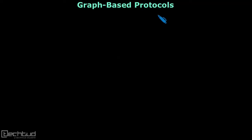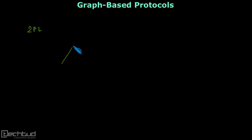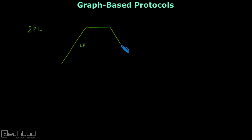Welcome to tector.com. In this lecture we will study graph-based protocols. So far we have studied two-phase locking protocol. In two-phase locking protocol we have two phases: the first one is the locking phase or growing phase, where only locks are acquired. After execution we have the shrinking phase or unlocking phase, where only unlocks are allowed.